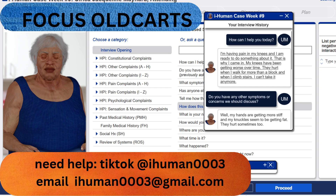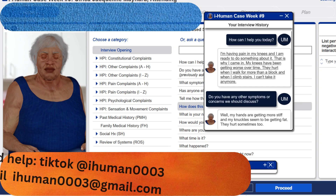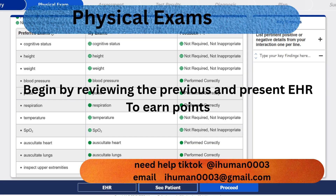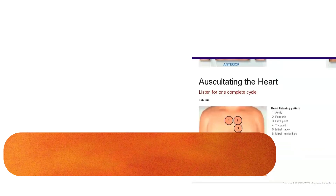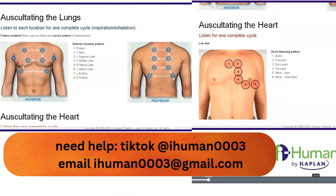We always start with vitals and general assessment. The patient has an antalgic gait, a limping pattern adopted to avoid pain, and she needs a cane, showing functional limitation. We perform a basic cardiopulmonary exam, carefully auscultating the heart and lungs in the correct pattern. We confirm these baseline findings are normal before moving on to the musculoskeletal system.